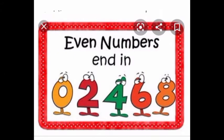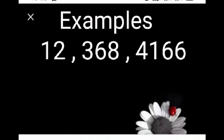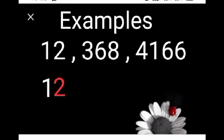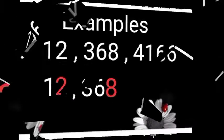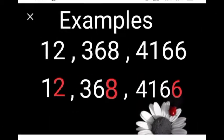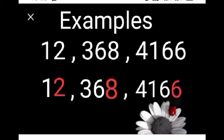The numbers ending with 0, 2, 4, 6, and 8 in the one's place are called even numbers. Examples of even numbers: Look at 12 — at the one's place, 2 is there, so this is an even number. Look at 368 — at the one's place, 8 is there, so this is an even number. Look at 4166 — at the one's place, 6 is there, so this is an even number.